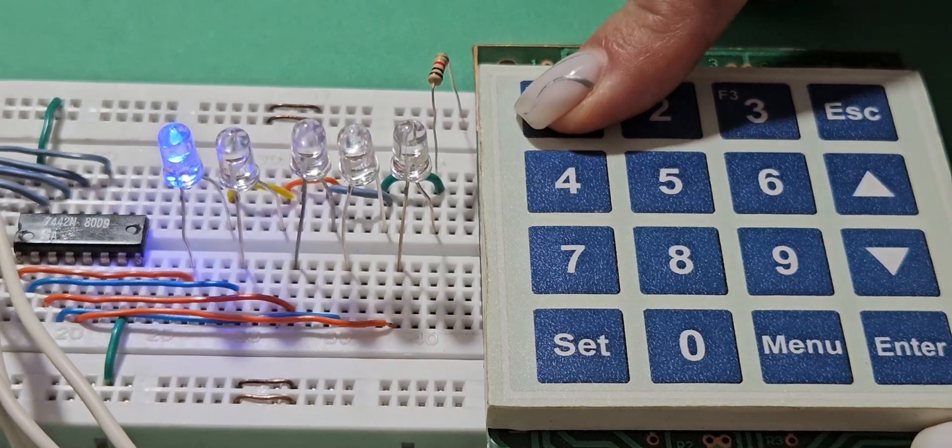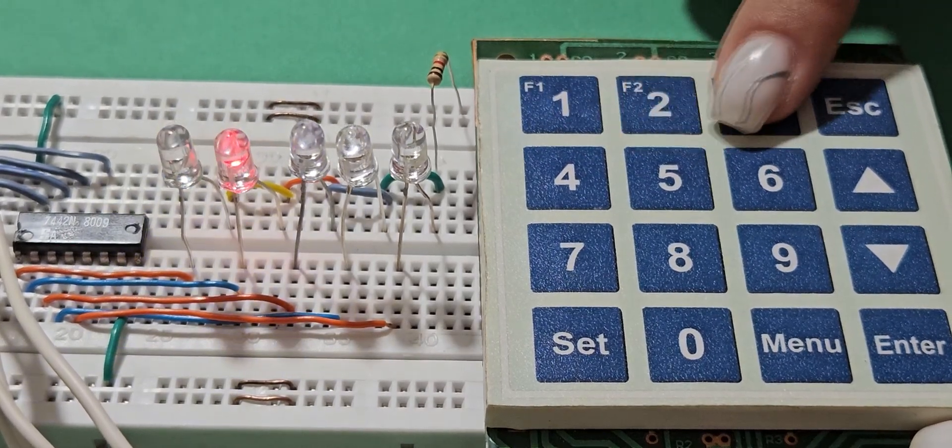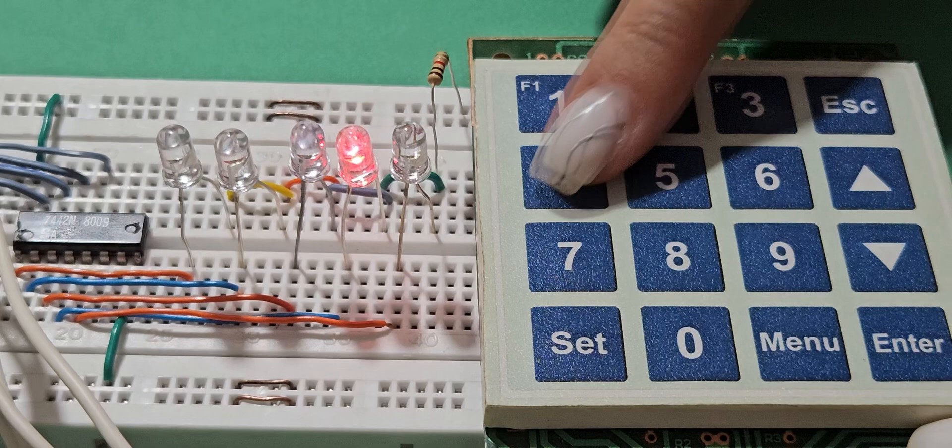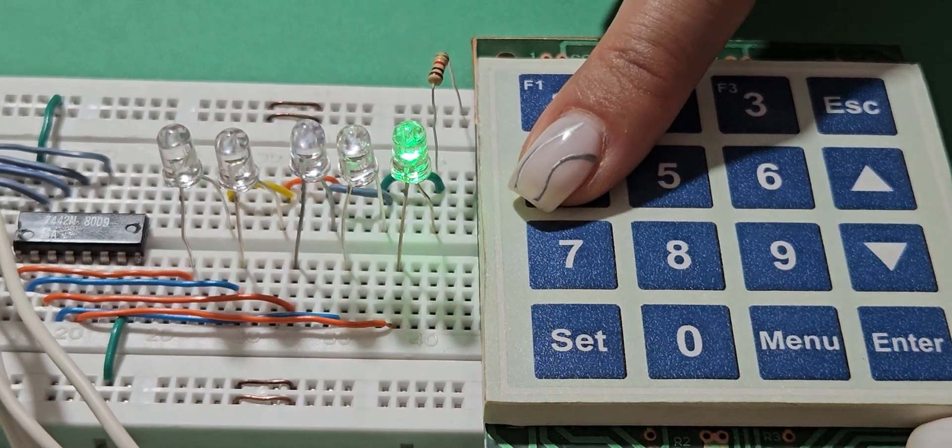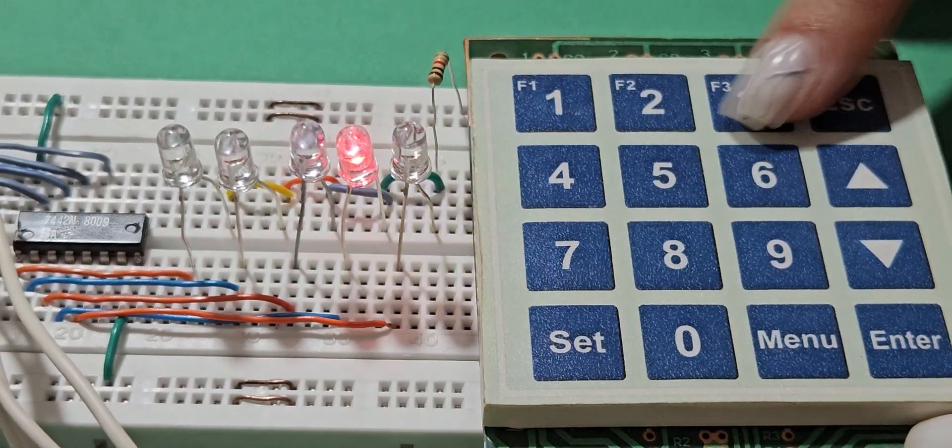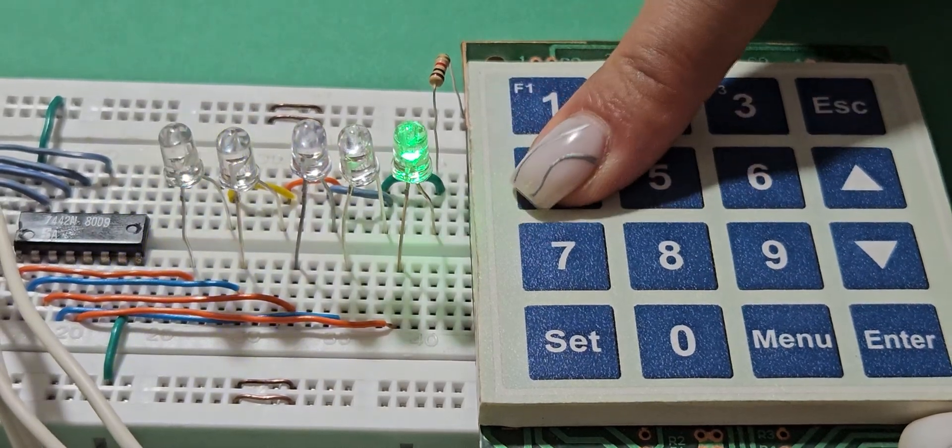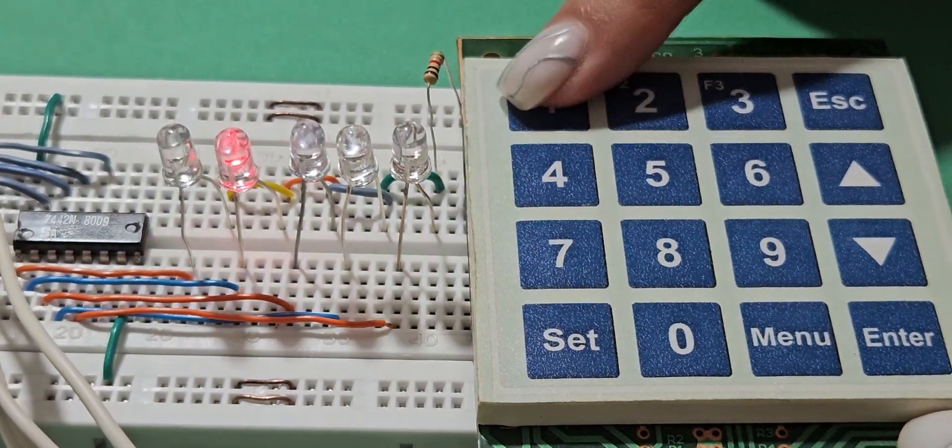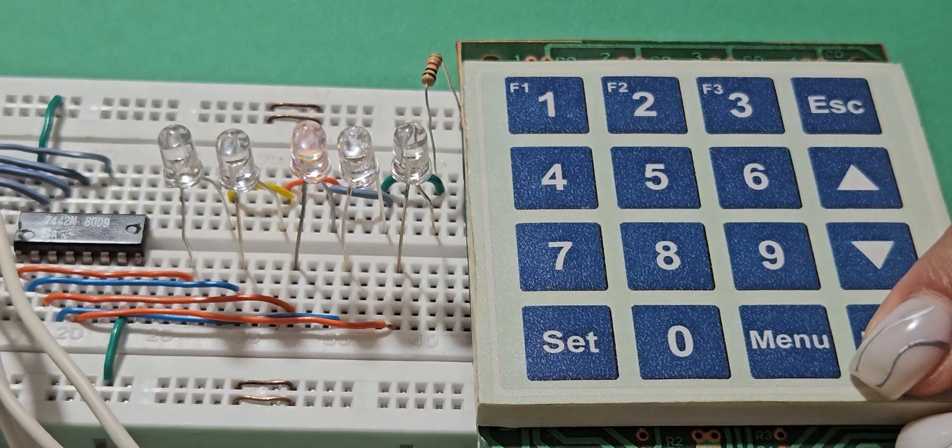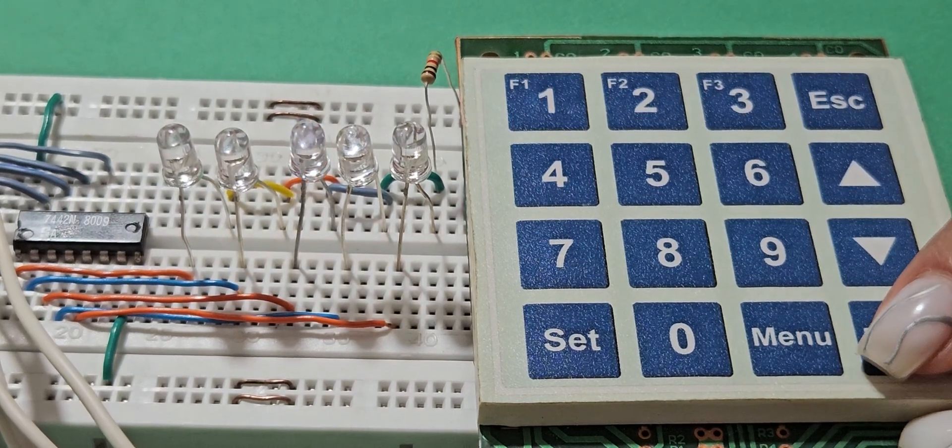In this way, by pressing keys 1 to 10, IC74922 first determines the key number pressed and sends it as a 4-bit binary number in its output, then IC7442 decodes this binary number and converts it to a decimal number. Finally, the LED corresponding to that key will turn on.